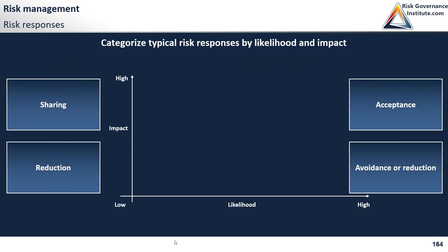Let's categorize typical risk responses — and I'm not saying this is an absolute answer. But typically, if you have a low likelihood, high impact event — that's top left on the matrix — what would typically be your response?